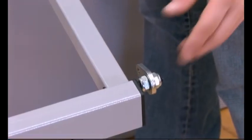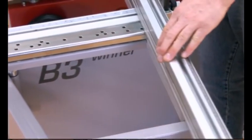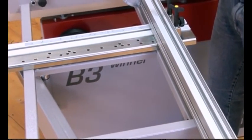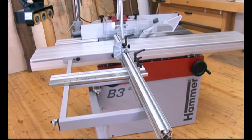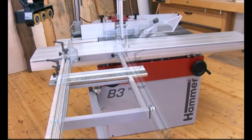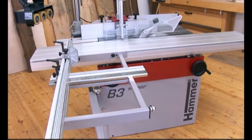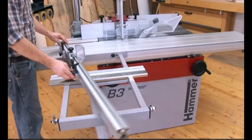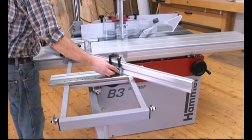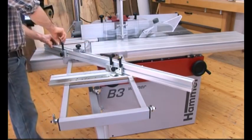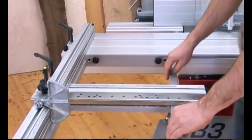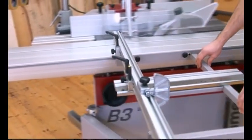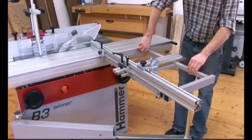The 90 degree end stop can be engaged to ensure an accurate right angle cut. The crosscut fence can also be positioned at the front of the outrigger table, and the outrigger can be moved and locked into position at any point along the sliding table.